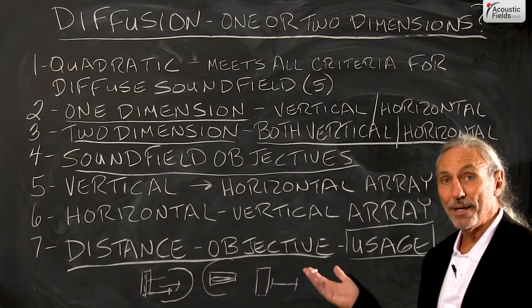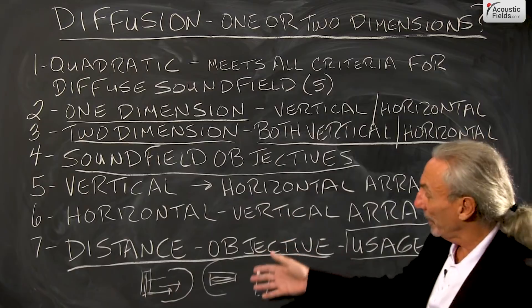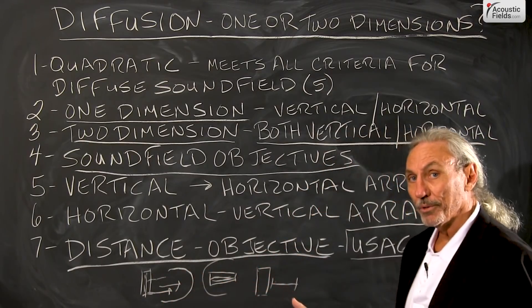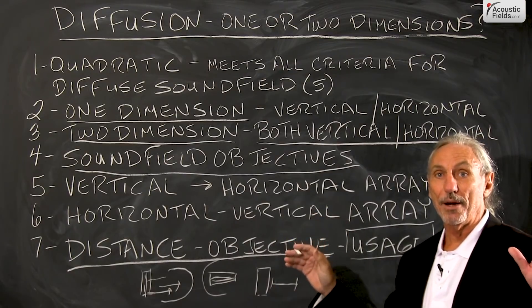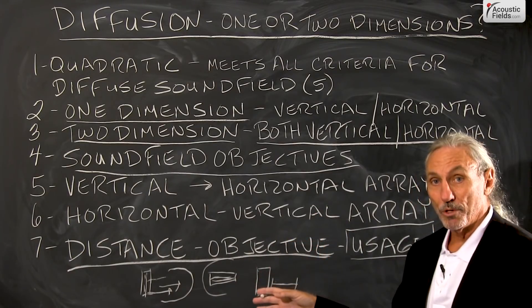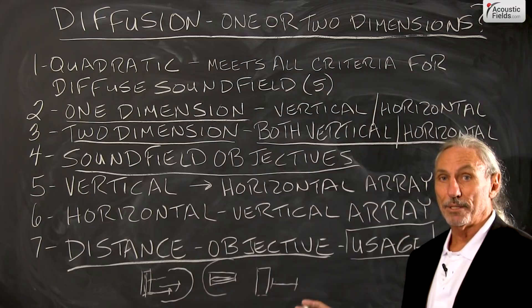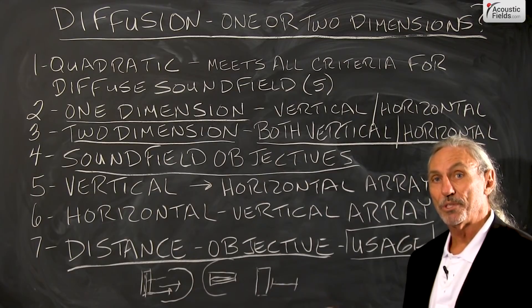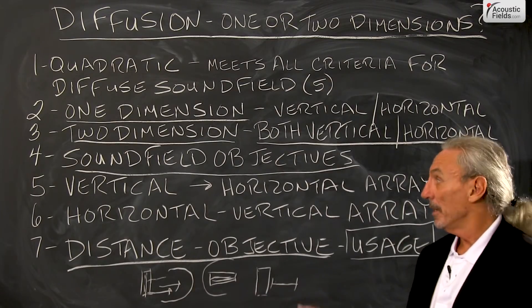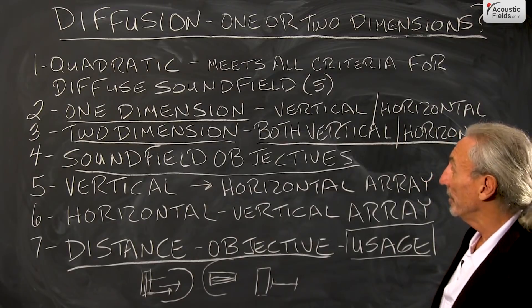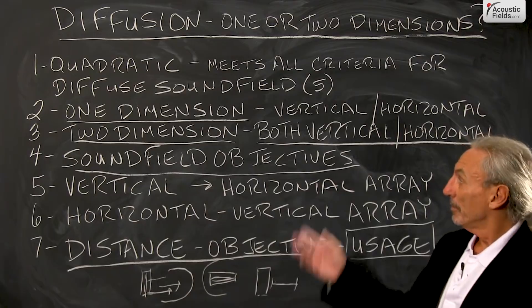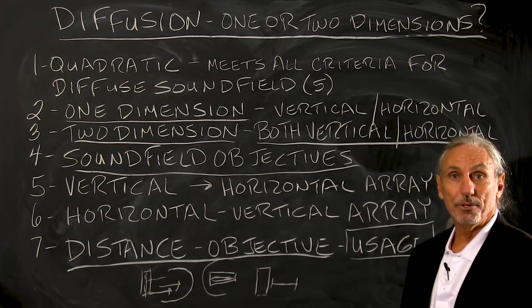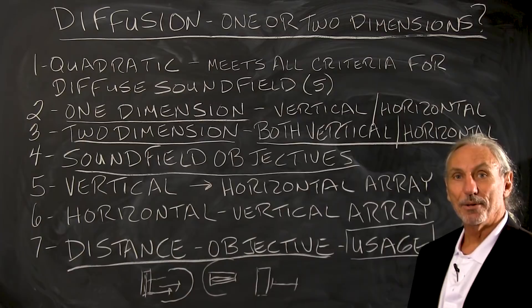So bottom line, if you have the room for vertical or horizontal diffusion and your objectives are definition, separation, and air, then we're in good shape. If you don't have that distance but still want the non-localization that you get with diffusion, we can look at two dimensions of diffusion. And I can determine that when you submit your room form. So I hope this helps clarify the diffusion issue. Thank you.